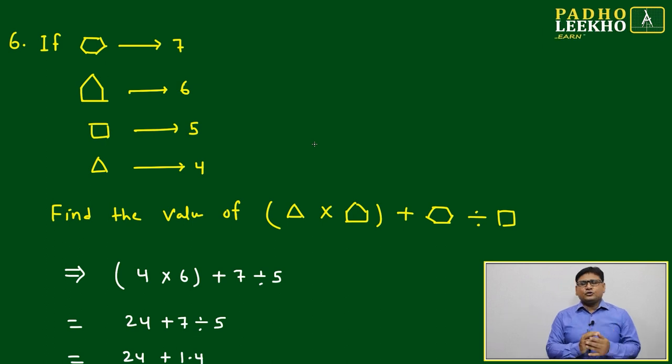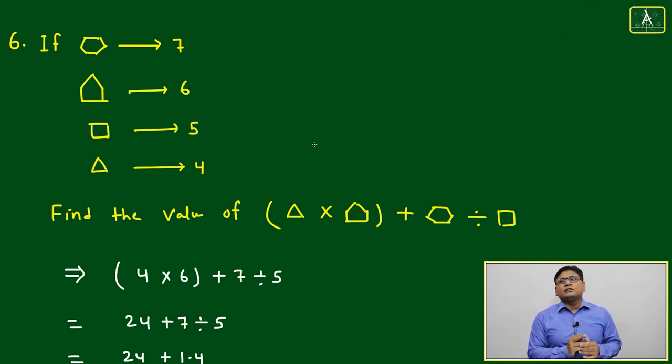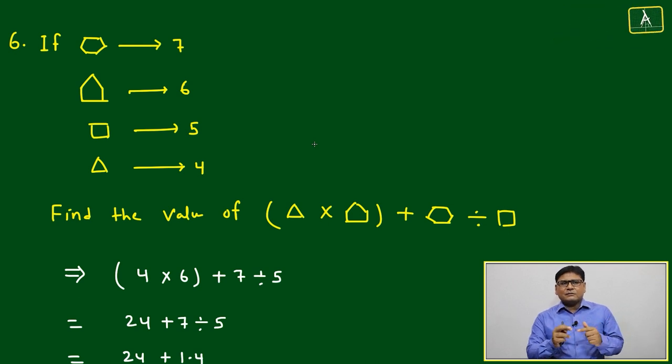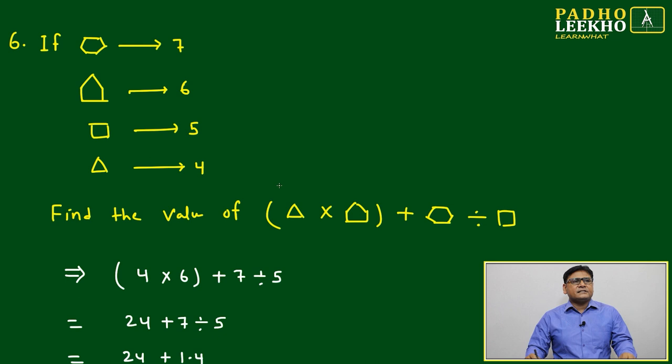Another type of question: we haven't seen questions related to brackets only, we've seen questions related to addition, subtraction, multiplication, and division. We'll include one question related to brackets. Here, the hexagon symbol represents 7, pentagon represents 6, square represents 5, and triangle represents 4.